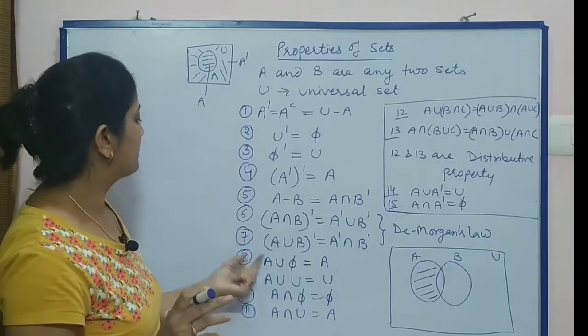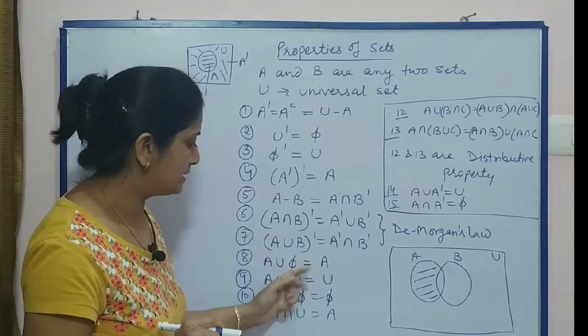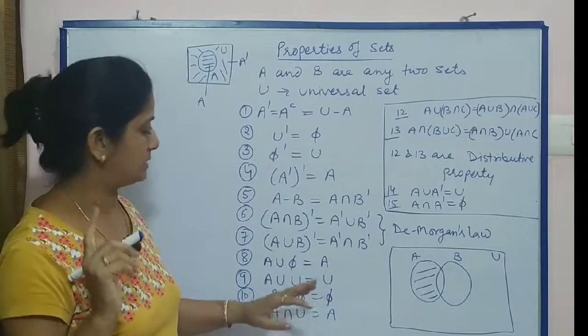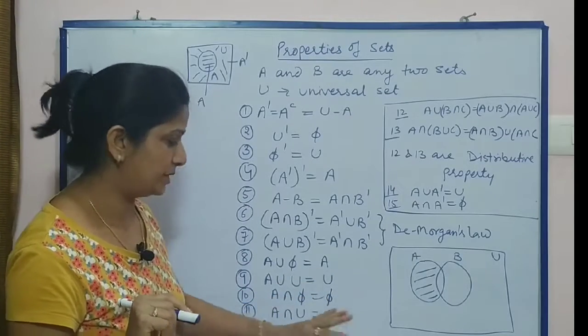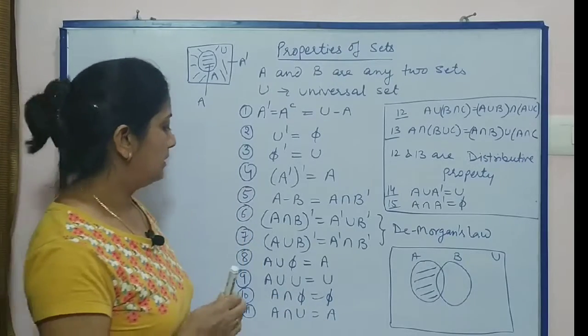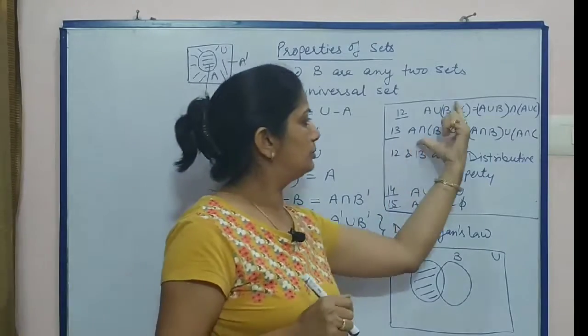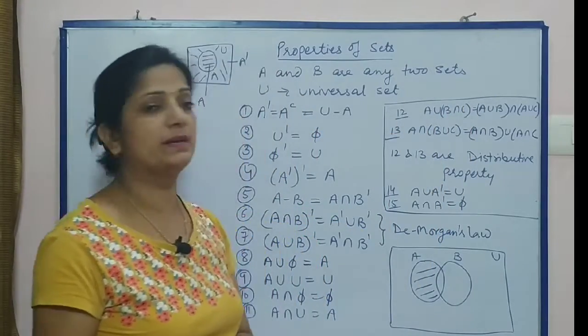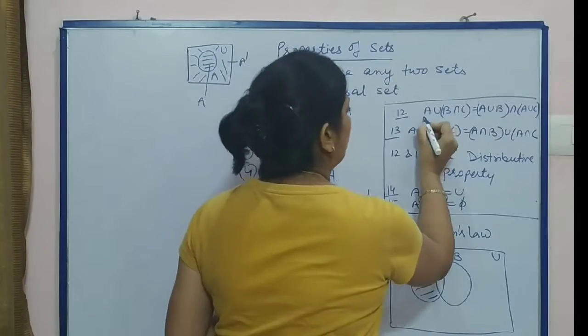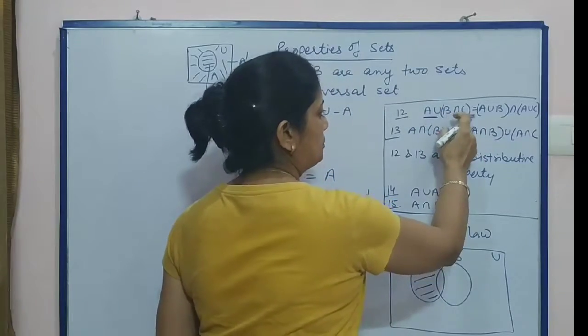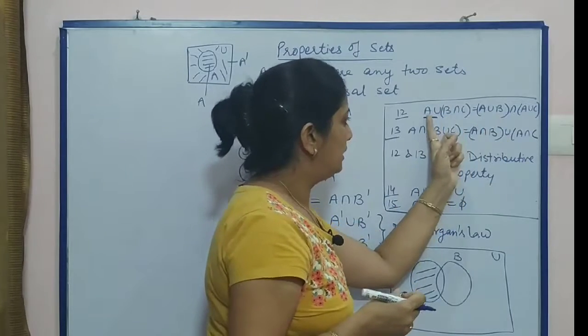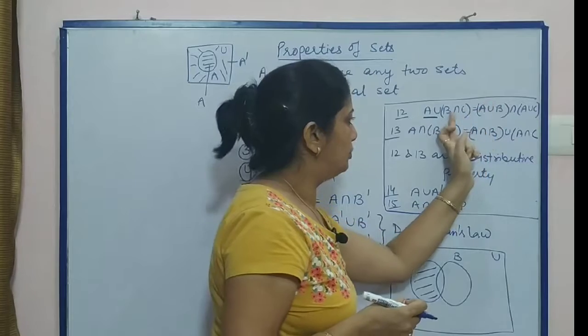A union empty set equals A itself. A union universal set equals the complete universal set. A intersection empty equals empty - nothing common. A intersection universal is A itself. Now these two properties are very important - these are known as distributive properties. Distributive means that the term you have is distributed across both sets.